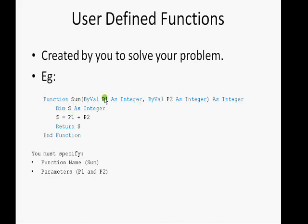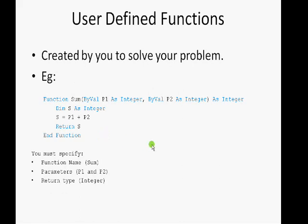Parameters get their values from the main program when the function starts execution. You must also specify the return type — after solving the problem, the function returns a value, and here that value's type is Integer. The value is returned using the Return statement. So here the function takes two numbers from the main program: the first is p1, the second is p2. It adds them together and returns the sum to the main program. The statements between 'Function' and 'End Function' are called the body of your function.